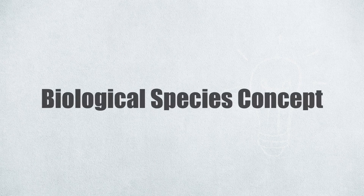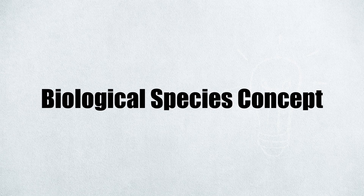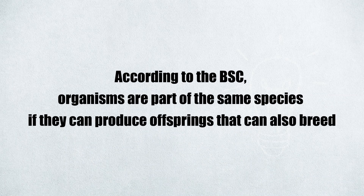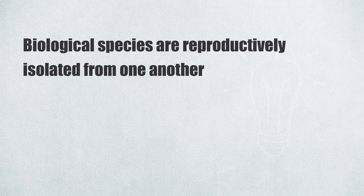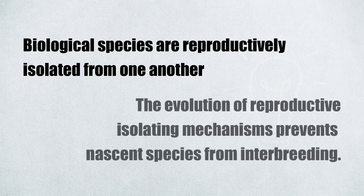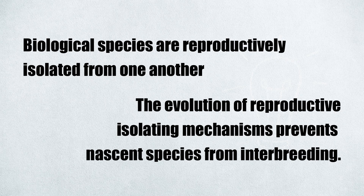The general definition of species is called the biological species concept, or BSC. According to the BSC, organisms are part of the same species if they can produce offspring that can also breed. Biological species are reproductively isolated from one another, and the evolution of reproductive isolating mechanisms prevents nascent species from interbreeding.